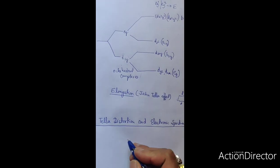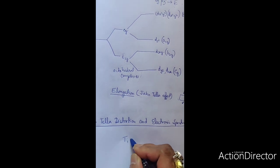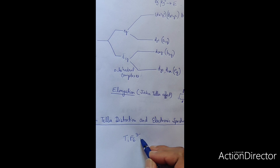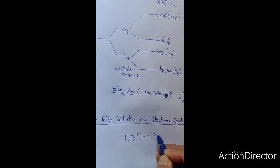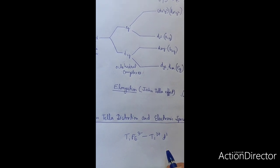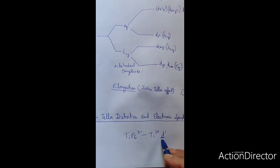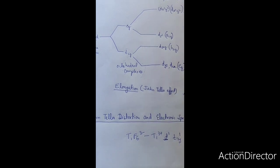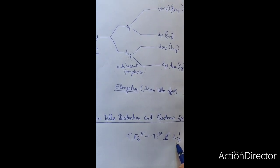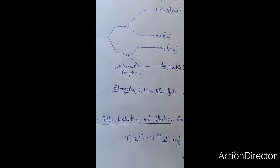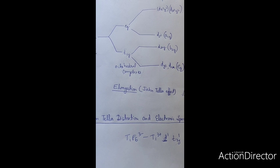For example, we can see the case of TiF6³⁻. Ti³⁺ has a D1 configuration — it has T2g¹ configuration. So Jahn-Teller distortion occurs and the T2g set splits into two sets of orbitals: dxy and dyz and dzx.